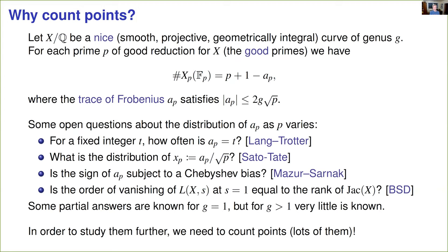For example, you could ask, how often is the trace of Frobenius equal to a particular integer? Alternatively, you could normalize your Frobenius traces by dividing by √p and consider the distribution of the corresponding sequence of real numbers on the interval [-2g, 2g]. Another game you can play is to divide the Frobenius traces into two teams, the positives and the negatives, and ask which team is ahead more often as you look over primes up to some increasing bound. Finally, and most relevant to this talk, one could ask, what do the Frobenius traces tell us about the L-function of the curve?